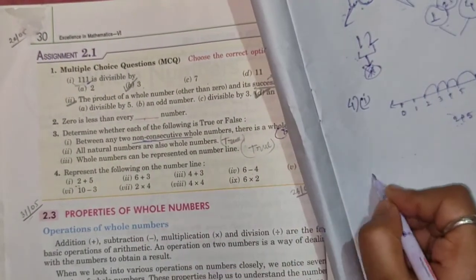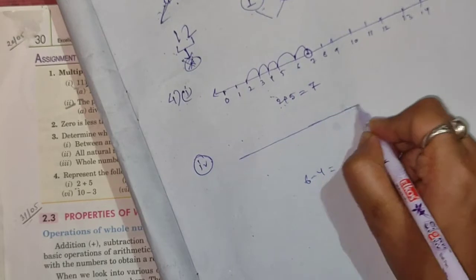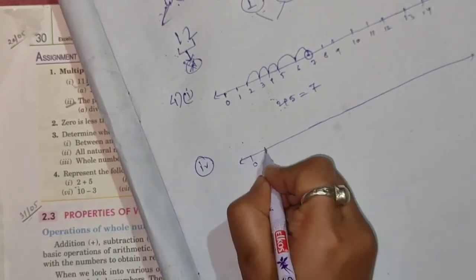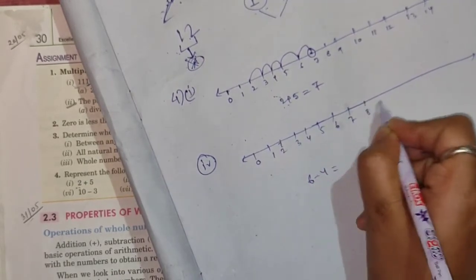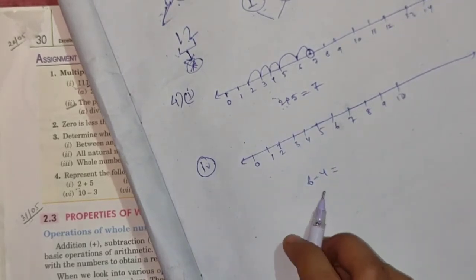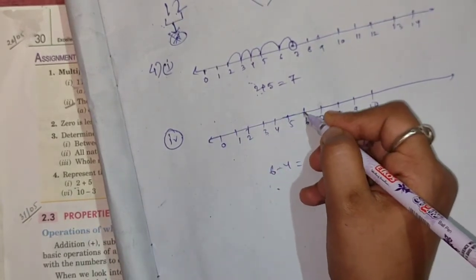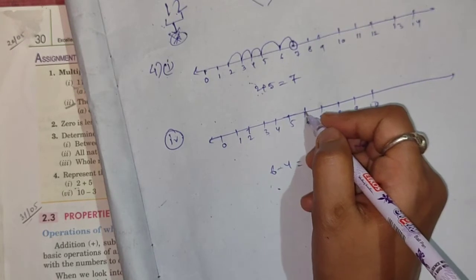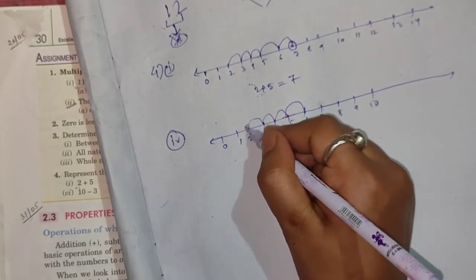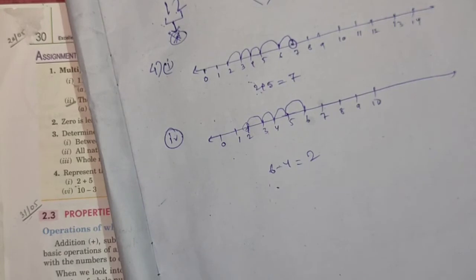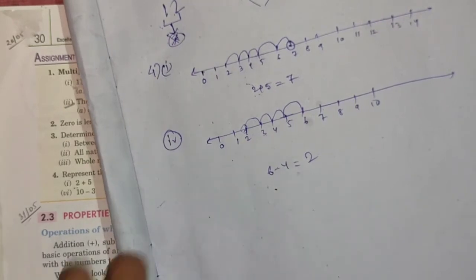Next: 6 minus 4. Draw a number line from 0 to 10. For subtraction, you start from the greater number, which is 6, and jump to the left side. How many units? 4 units: 1, 2, 3, 4. We have reached 2. So 2 is the answer. This is how you represent subtraction on a number line.